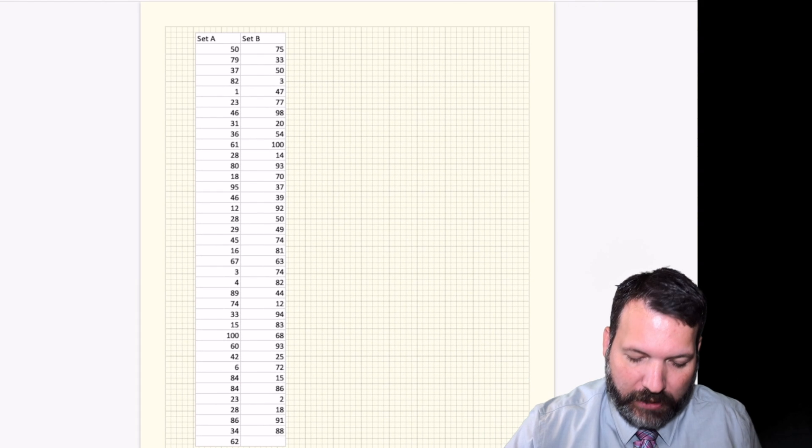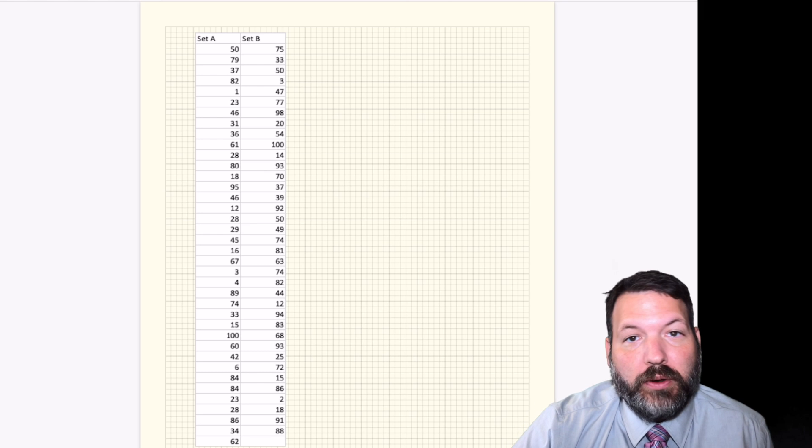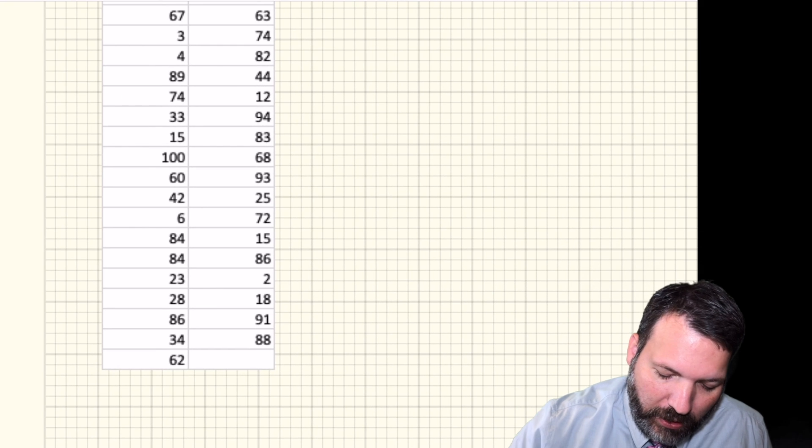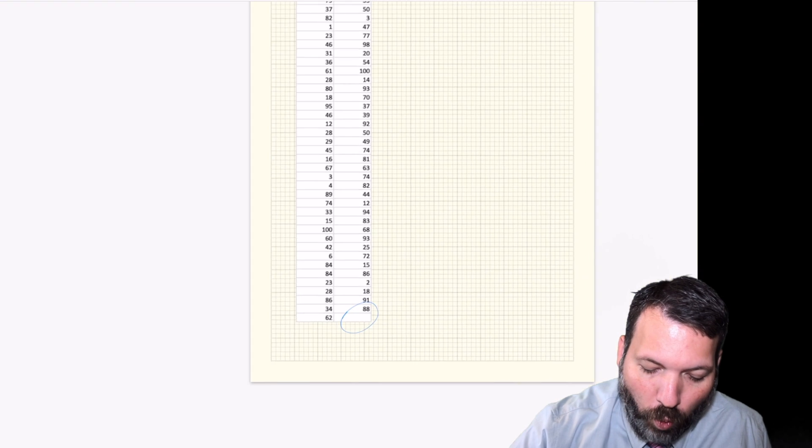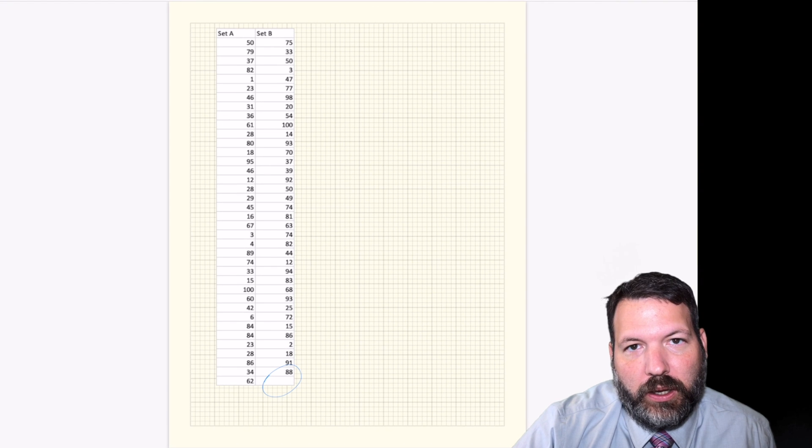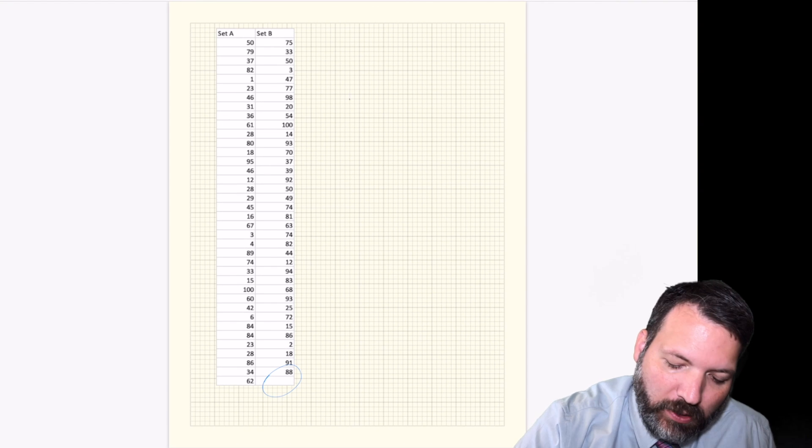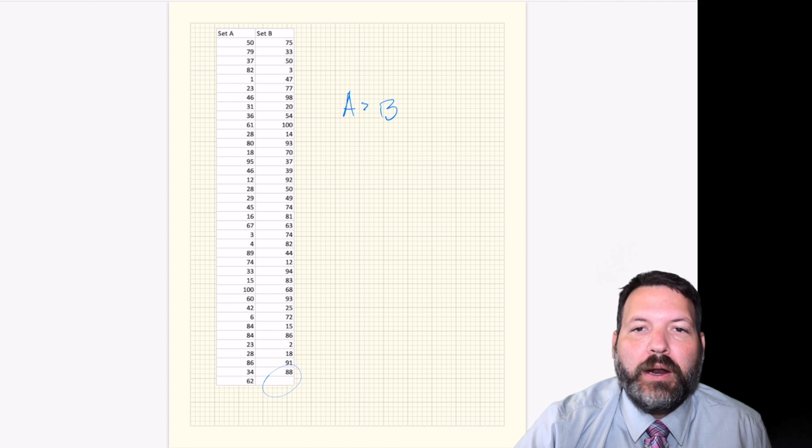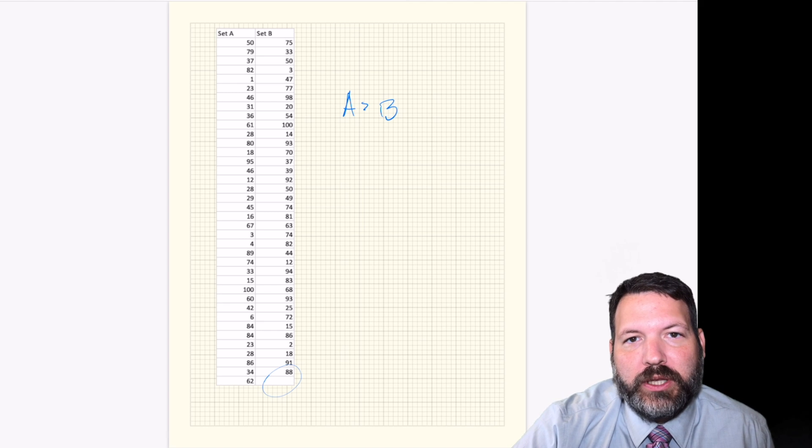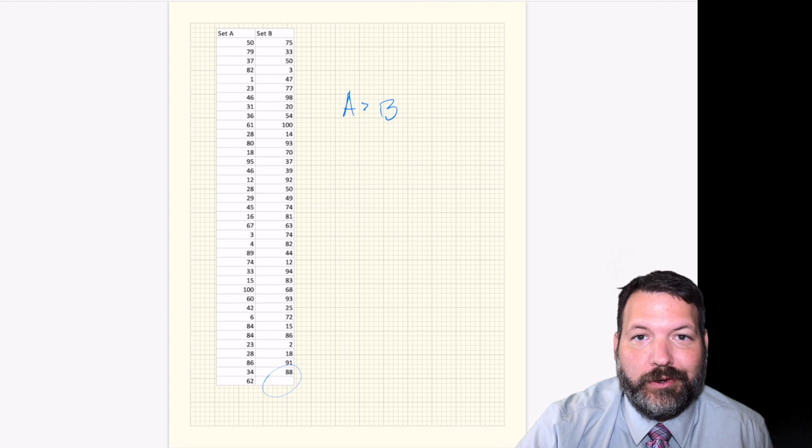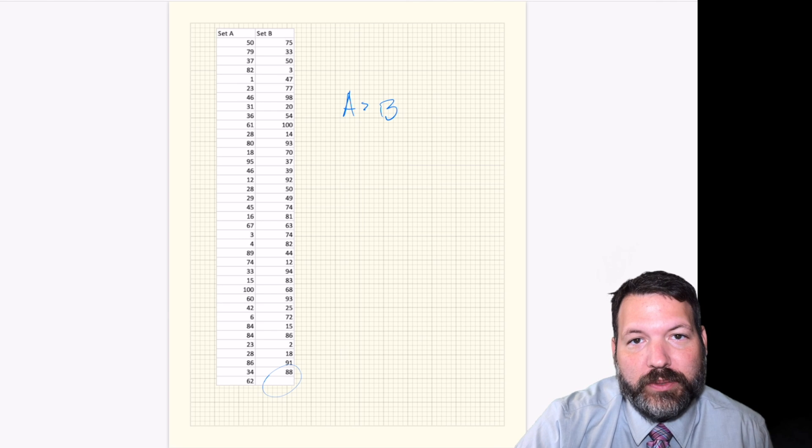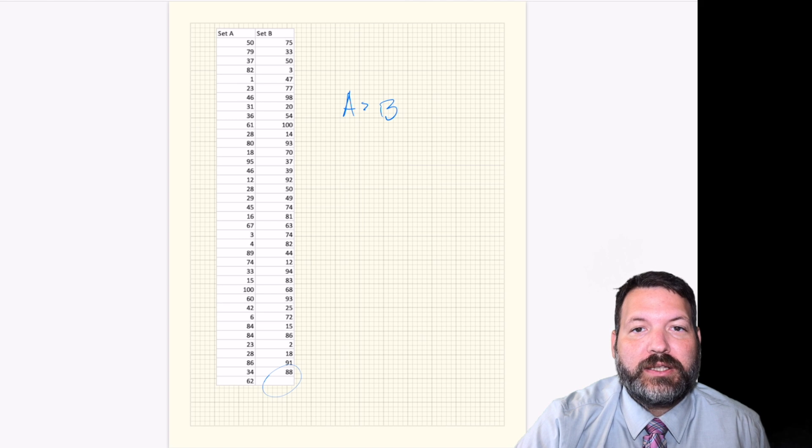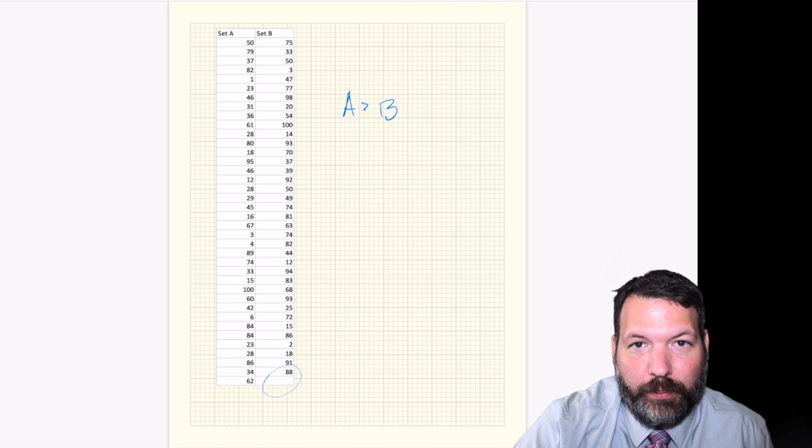We can do the same thing here. If we go ahead and put set A and set B into two different lists, we can see, oh, so it ends up being the case that set B has one fewer element in it than set A does. And so again, we could end up saying set A is larger than set B. Not only does a function help us accomplish this with sets of finite amount, that is, there is a limited number of items in set A and set B, it also lets us figure this out for sets that don't have finite numbers of elements.